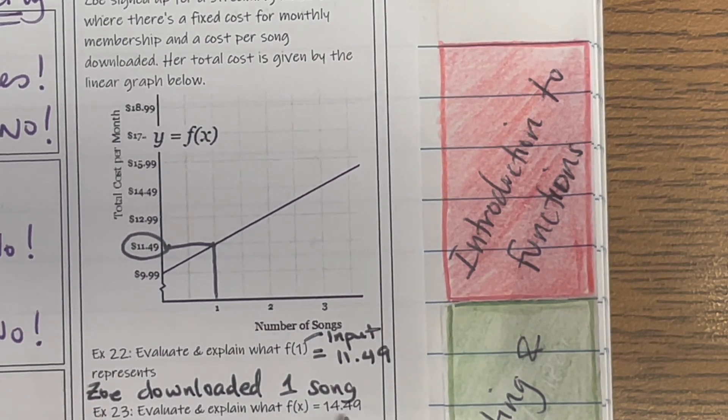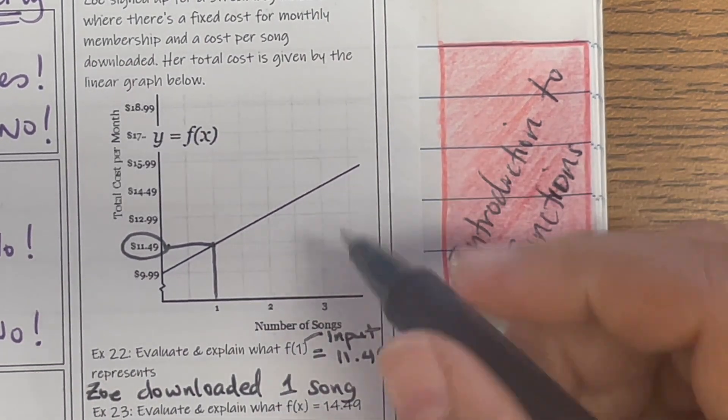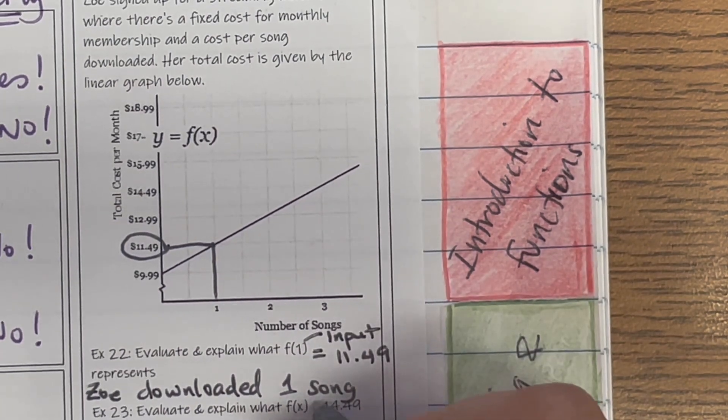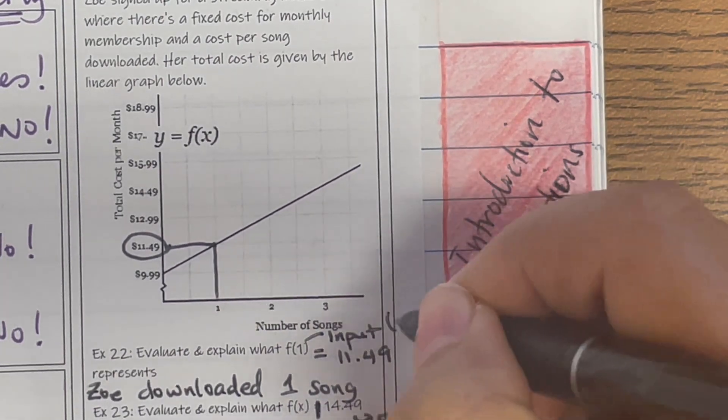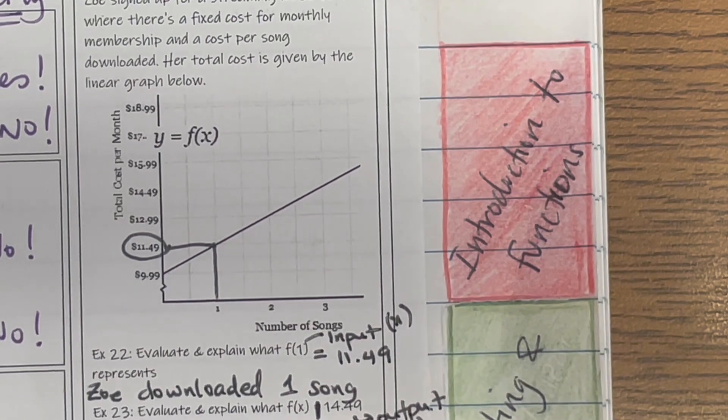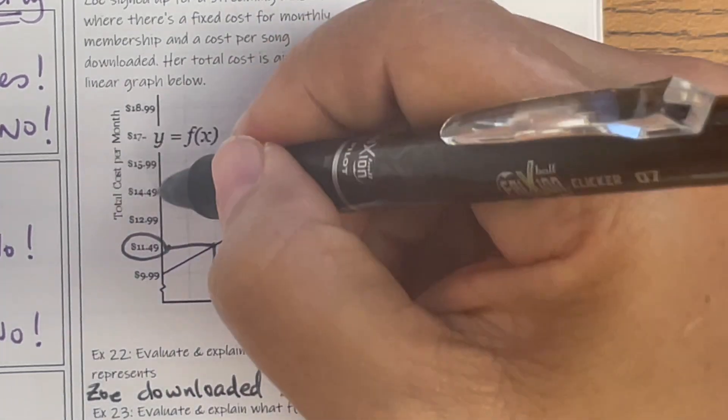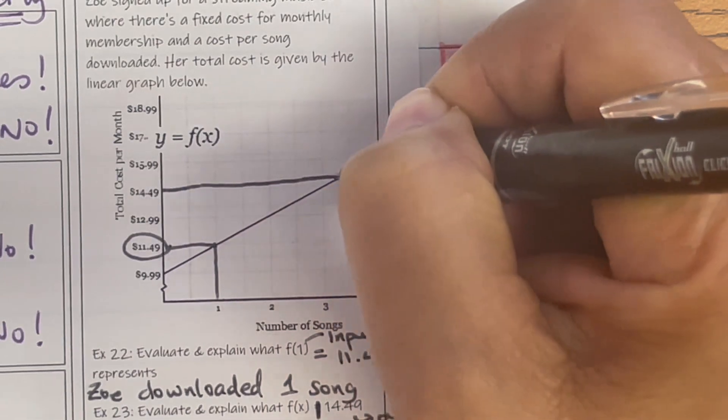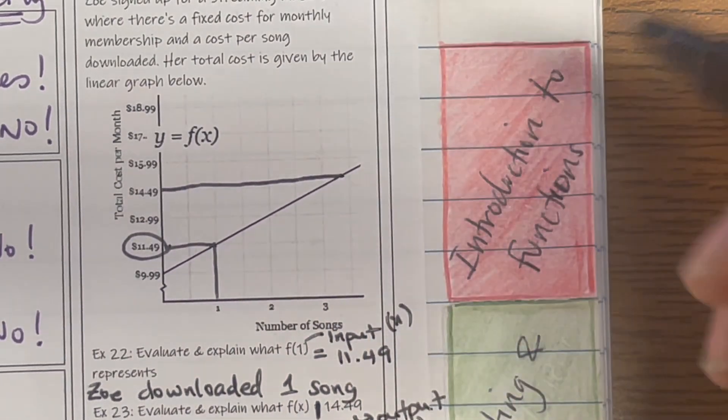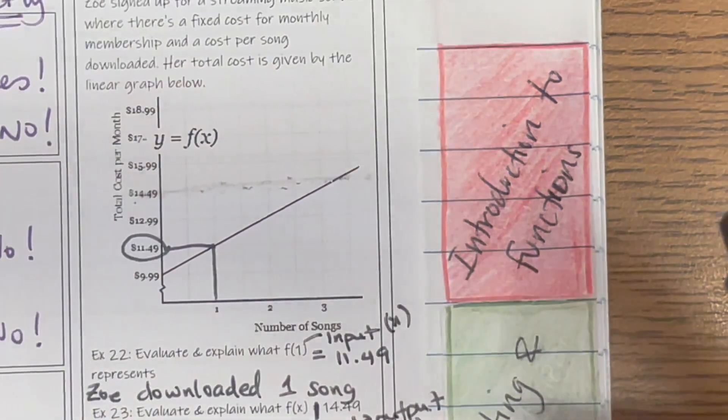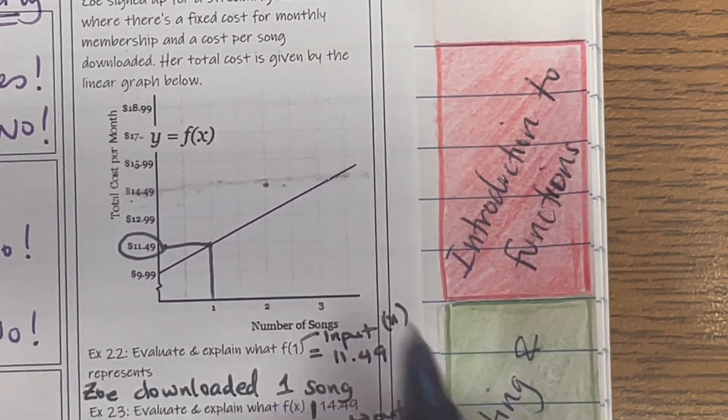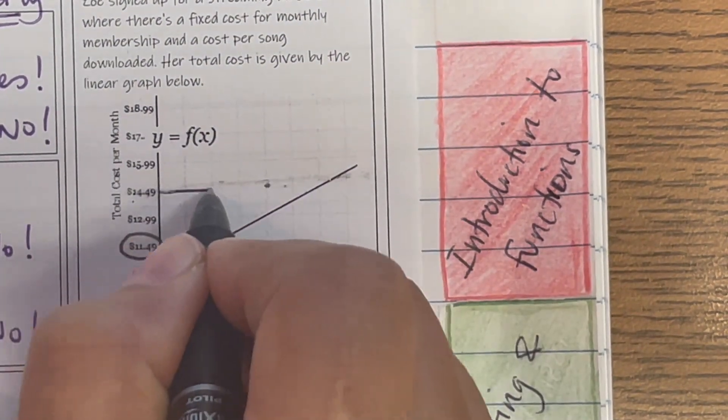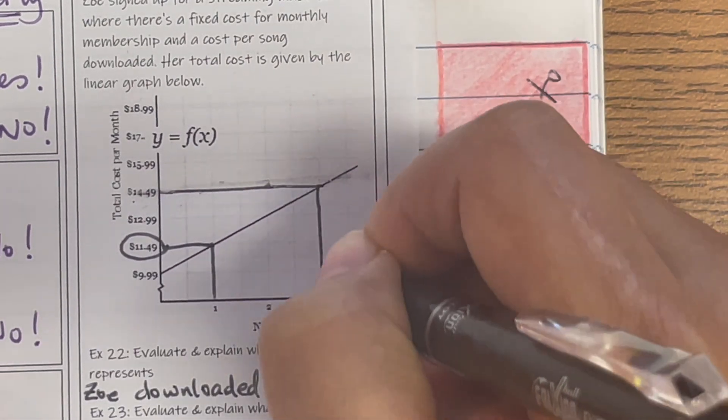Evaluate and explain what F(x) = $14.49 means. So remember again, this is my input. After the equal sign, this is my output. So my input is my X, my output is my Y. So I'm just going to go to my Y and see at $14.49, which is right here. Go to the graph. Draw it to the graph, and then draw it right down.